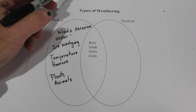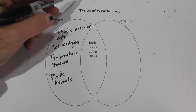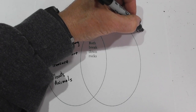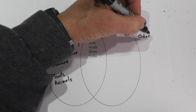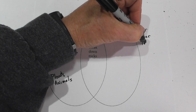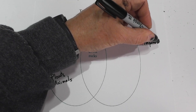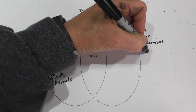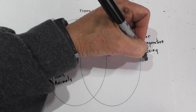With a chemical change, a new substance is created. A couple of things happen: you may get a change in color, a change in odor, a change in temperature, some fizzing bubbles, and you may get an explosion.